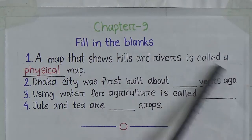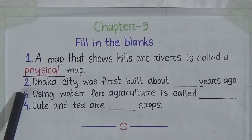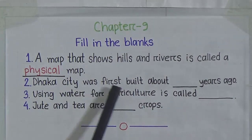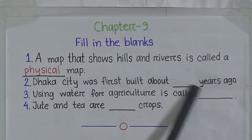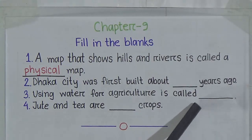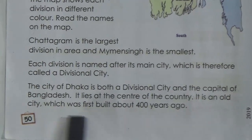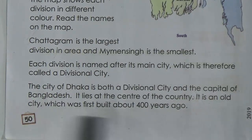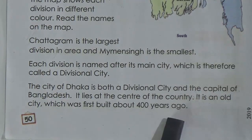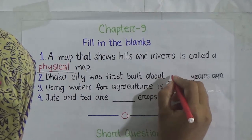Number 2: 'Dhaka city was first built about ___ years ago.' Can you say the answer? Come to lesson 1, page number 50. It says it is an old city which was first built about 400 years ago. So Dhaka city was first built about 400 years ago. In the gap we have to write 400.